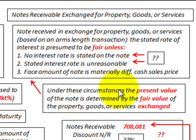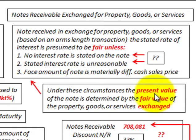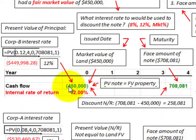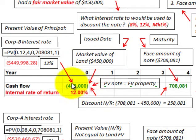Under these three circumstances, the present value of the note is determined by the fair value of the property, goods, or services exchanged. So the present value of the note is determined by the fair value of the goods or services exchanged. I've got our example laid out in a timeline: at the beginning, the market value of the land is $450,000.